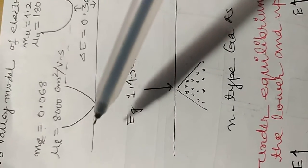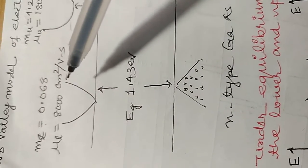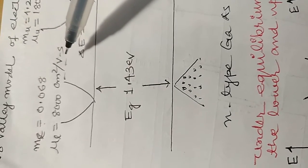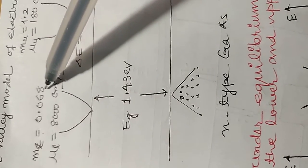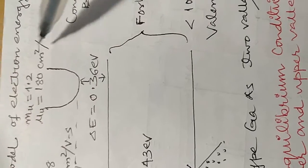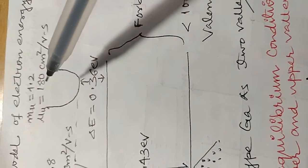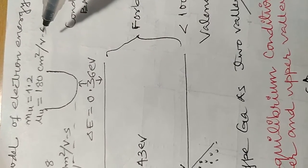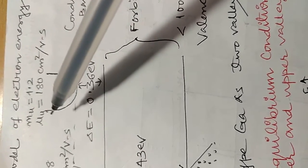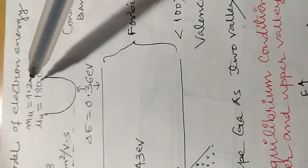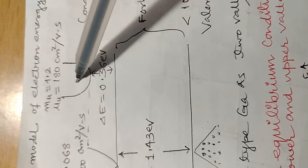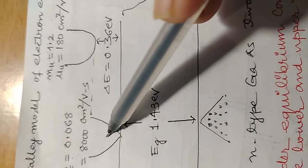One is the lower energy level having charge density mobility of 8000 cm² per volt second and effective mass of those electrons is 0.068. Whereas in the upper valley, the charge density mobility of the electrons is 180 cm² per volt second and effective mass of the electrons is 1.2. This is heavy valley and this is light valley, having heavy mass and light mass.